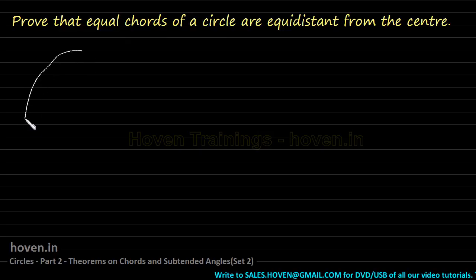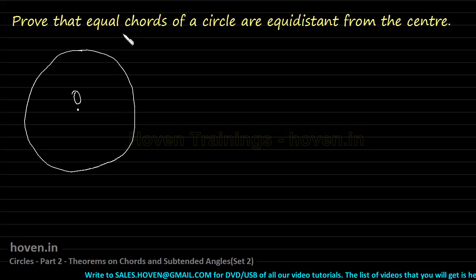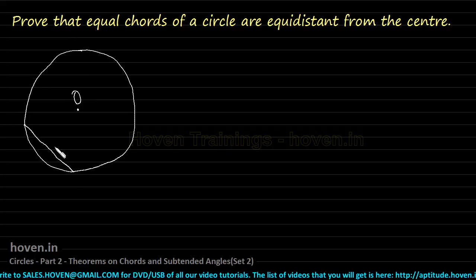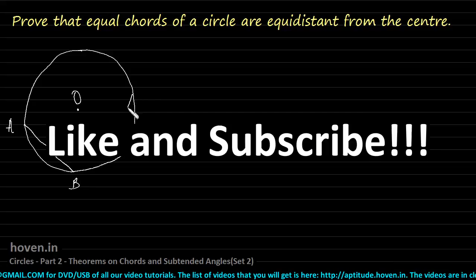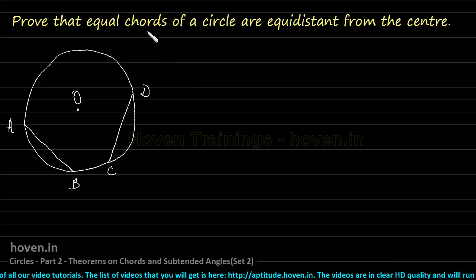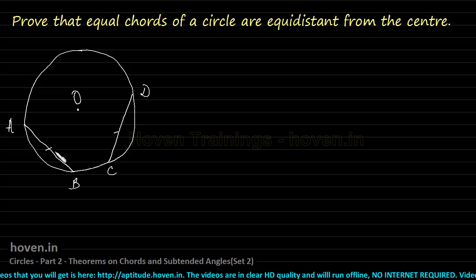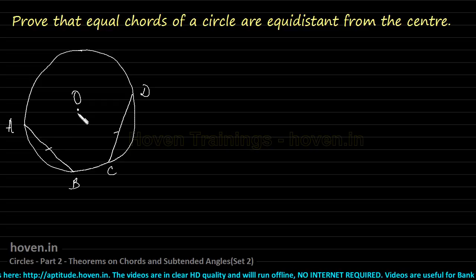Let us suppose this is our circle that is given to us, and let O be the center of this circle. Two chords have been given as equal. Let this be one chord, call it AB, and let this be a second chord, call it CD. These two chords are given equal. We have to prove that the distance of these two chords from center O is also equal.